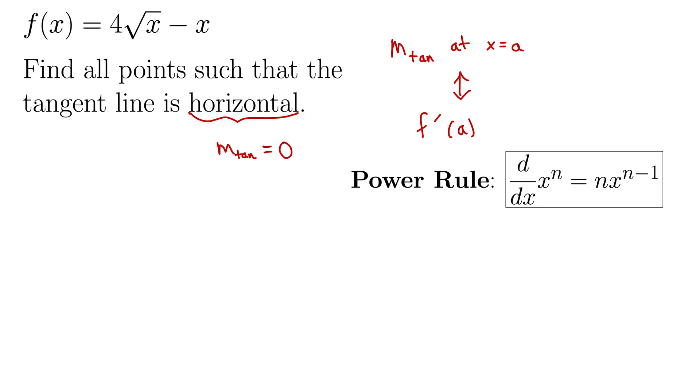So I'm going to change this function first to be f of x. I'm not really changing it, just rewriting it, I guess. Equals 4x to the 1 half minus x. Okay, then we can quickly take the derivative.